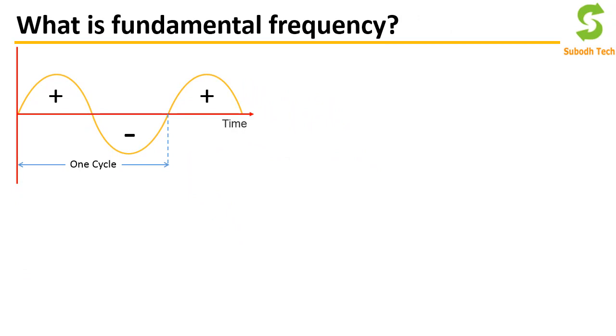We can also calculate frequency if time is known with the help of this relation: f = 1/T, where f is the frequency (the cycles in unit time) and T is the time taken by the waveform to complete one cycle.